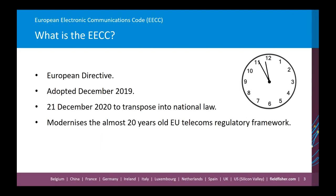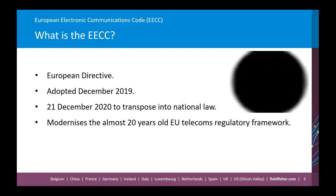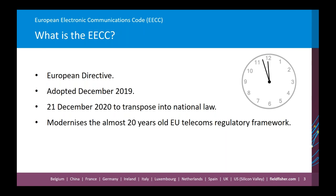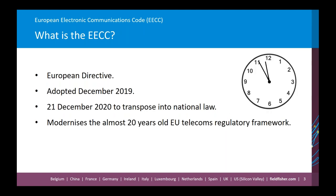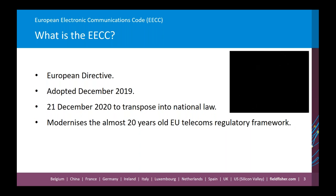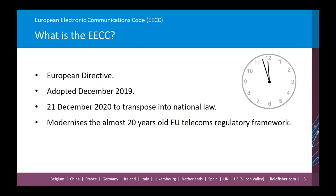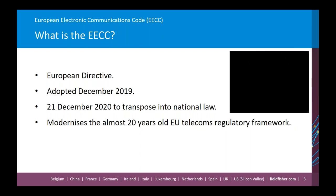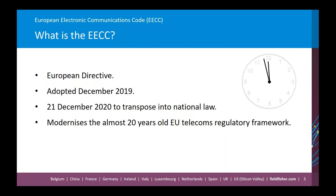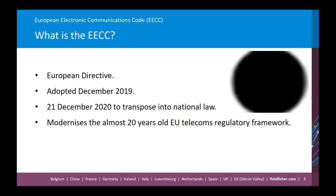The European Electronic Communications Code — which we'll call the EECC — is a European Directive. Being a directive means it must be transposed into national law, rather than a regulation like the GDPR which has direct effect. This particular directive was adopted in December 2019, but crucially member states have until the 21st of December 2020 to transpose it — which, if you still have any concept of time during this lockdown, is actually just a few weeks away.